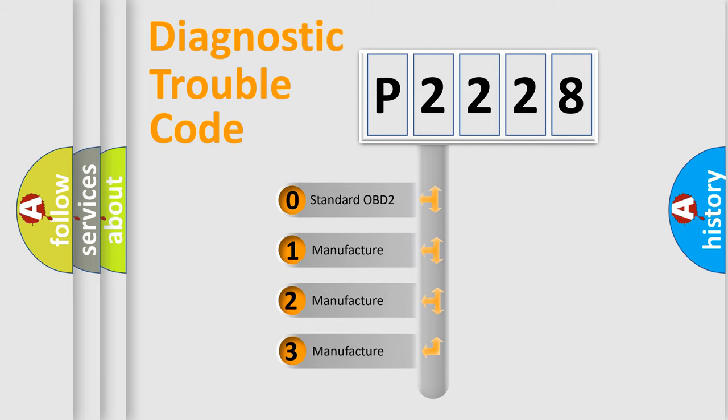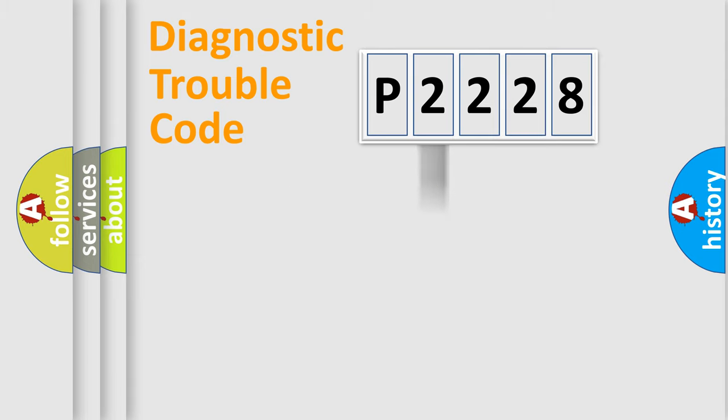If the second character is expressed as zero, it is a standardized error. In the case of numbers 1, 2, or 3, it is a manufacturer-specific expression of the car-specific error.